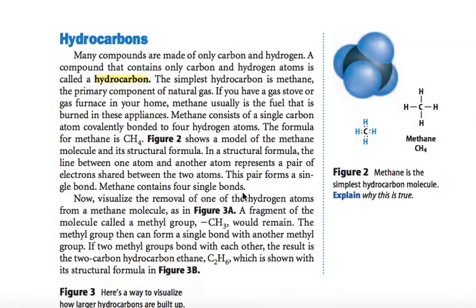There is a constant bond between carbon and hydrogens, and one of those prevalent things is called hydrocarbons. Many compounds are made up of only carbon and hydrogen. A compound that contains only carbon and hydrogen atoms is called a hydrocarbon. The simplest hydrocarbon is methane, the primary component of natural gas. If you have a gas stove or a gas furnace in your home, methane is usually used as the fuel burned in these appliances. Methane consists of a single carbon atom covalently bonded to four hydrogen atoms. The formula for methane is CH4. Figure 2 shows a model of the methane molecule and its structural formula.